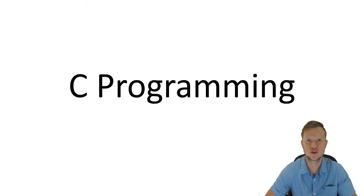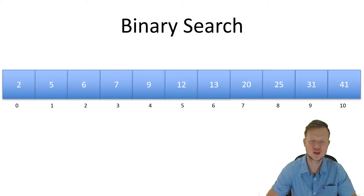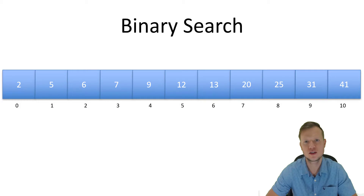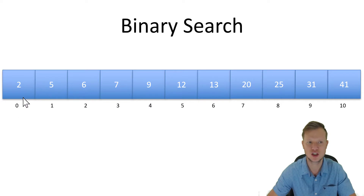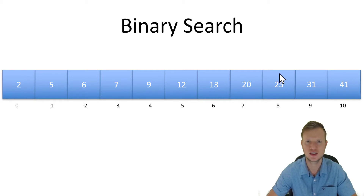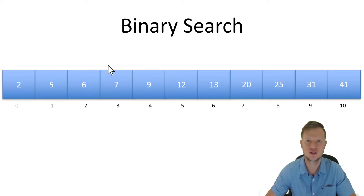Hi and welcome to C programming. In today's lesson we're going to talk about binary search. Binary search is a searching algorithm to find the index of a specific number. We've got an array of size 11 — it's size 11 because we start at index 0 and move to index 10, giving us 11 values. So we've got indexes from 0 to 10 and we are searching for a specific number in this array.